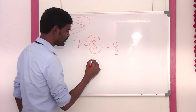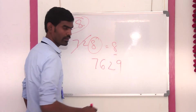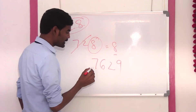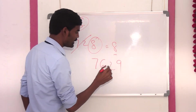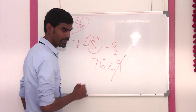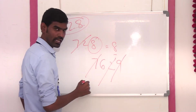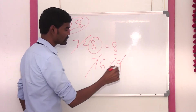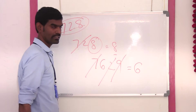For example, 7629. The digit sum of 7629: we can see that 7 plus 2 is 9 — we can cancel it. So the last final answer is 6.